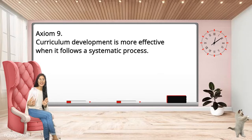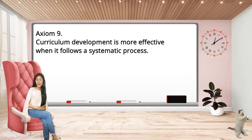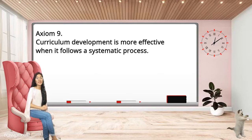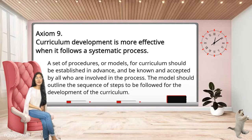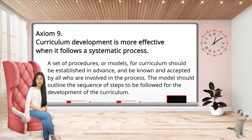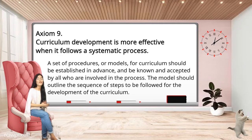Axiom 9: The curriculum needs systematic development and should be made comprehensive by holistically looking at the whole canvas. Systematic development is more effective than trial and error. A set of procedures or models for the curriculum should be established in advance and be known and accepted by all who are involved in the process. The model should outline the sequence of steps to be followed for the development of the curriculum.